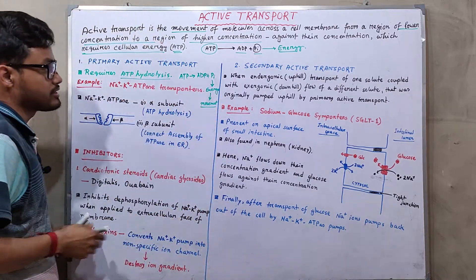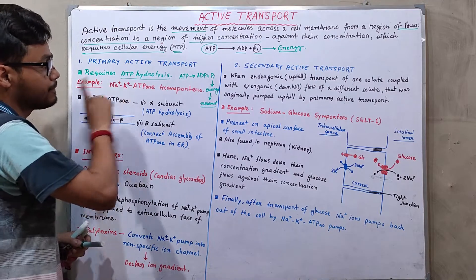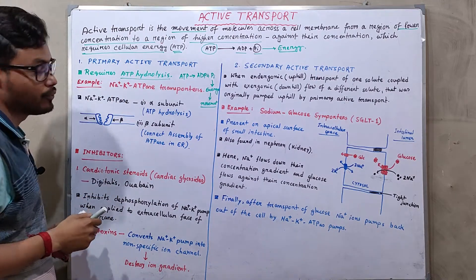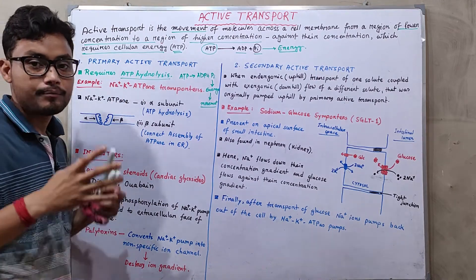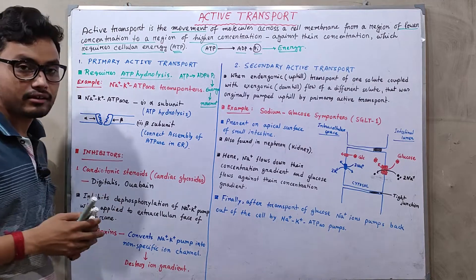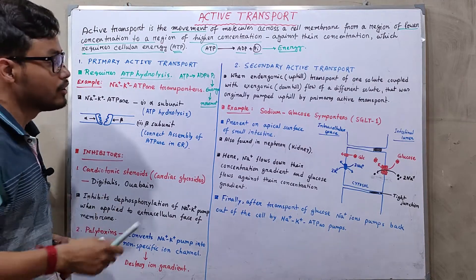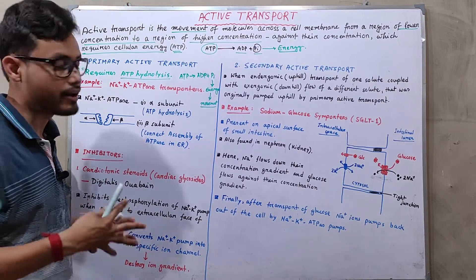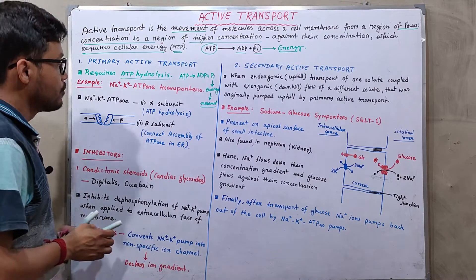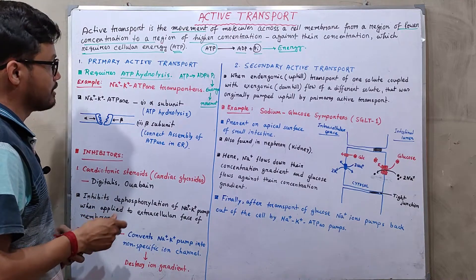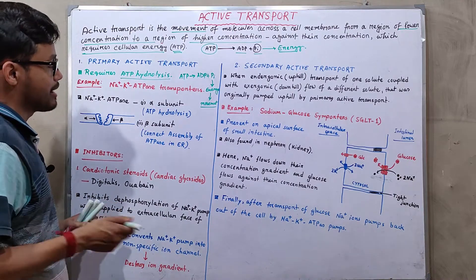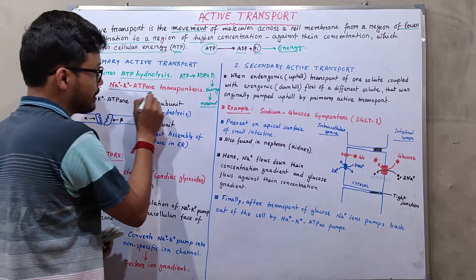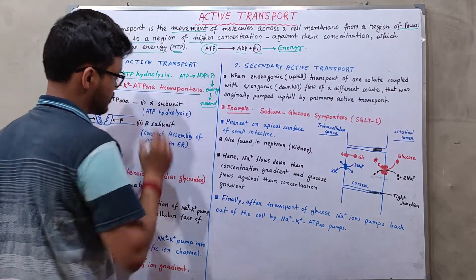In primary active transport, a transporter or pump is essential to transport molecules from lower concentration to higher concentration. One example of these primary active transporters is the sodium-potassium ATPase transporter.